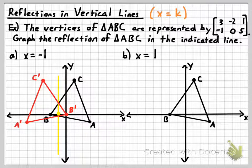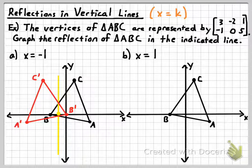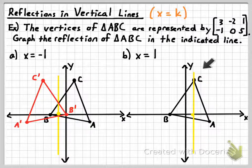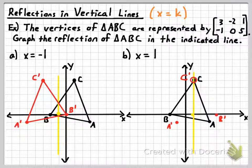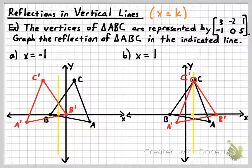See if you can do this one on your own and check your answer with mine. You should have started with the line X equals 1, reflected A across the line of reflection, reflected B across the line of reflection at appropriate distances, and then C stayed in the same place because it was on the line of reflection. Thanks for watching — make sure you see the next video where we reflect across the axes and the lines Y equals X and Y equals negative X.